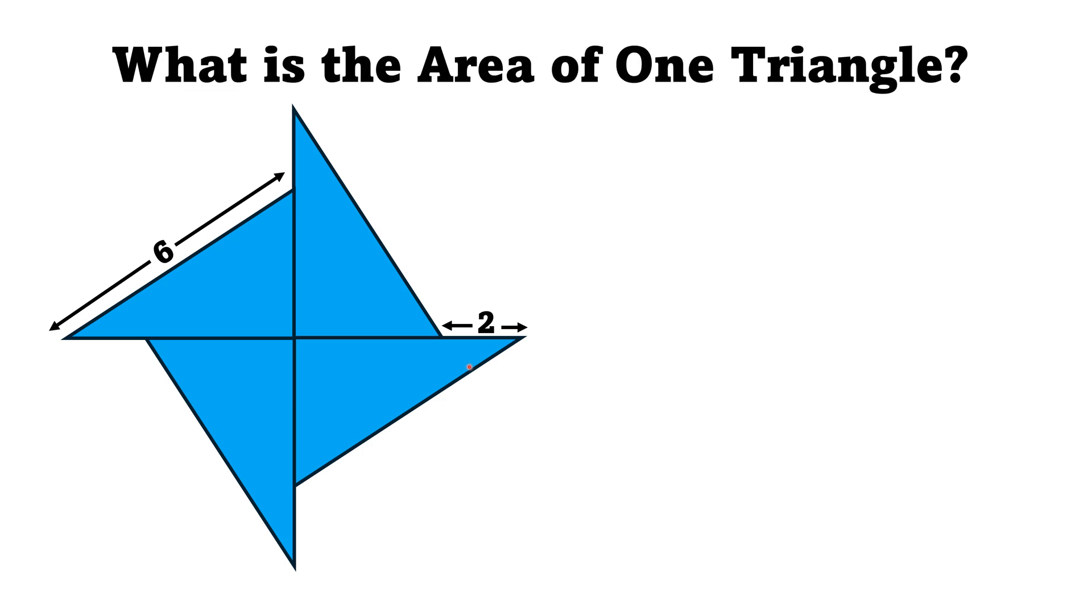Hello everyone. In this video, given are four identical right triangles arranged in this way. It is given that the hypotenuse of each right triangle is six units, while this length is two units. By this limited data, we have to find the area of one triangle.